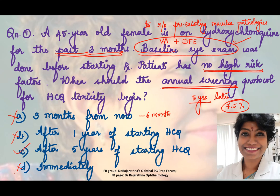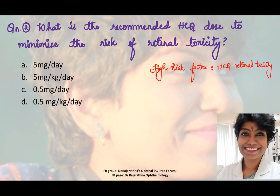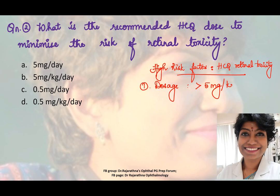As long as there are no high-risk factors, annual screening begins at five years. Now, what are the high-risk factors for a patient to develop hydroxychloroquine-related retinal toxicity? Number one is dosage — when the dose is more than five milligrams per kilogram per day, it is a high-risk factor. So the recommended dose to minimize risk of retinal toxicity should be less than five milligrams per kilogram per day.